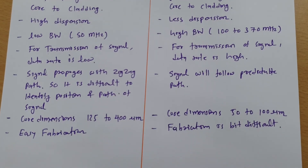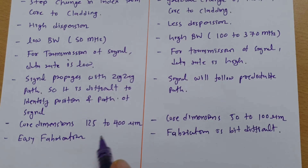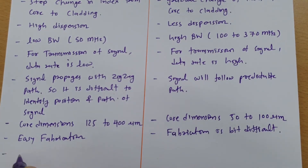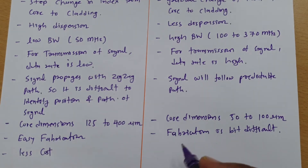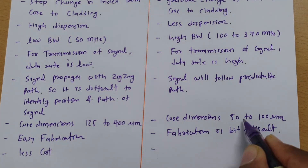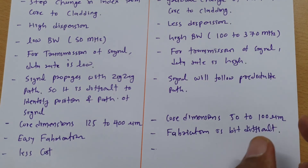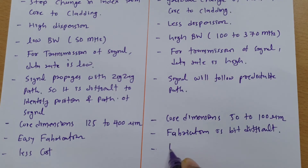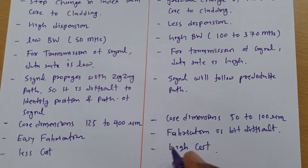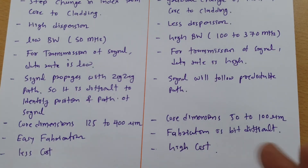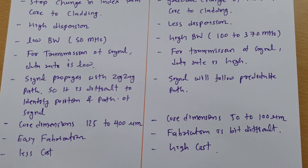As higher core dimensions make fabrication easier, cost will be less for Multi-mode Step Index Fibre. As dimensions are very compact and fabrication is difficult for Multi-mode Graded Index Fibre, cost will obviously be high. Based on cost, one can consider what type of need they have and select the appropriate multi-mode fibre.